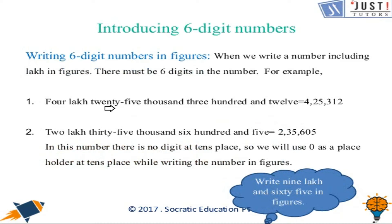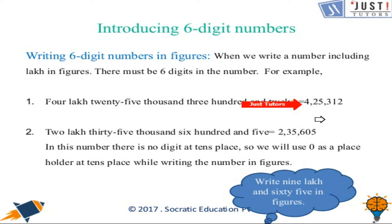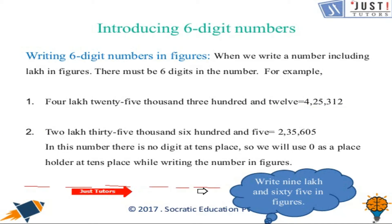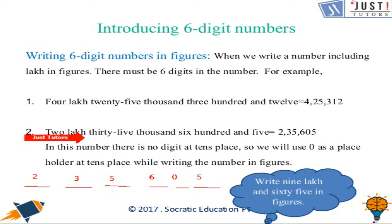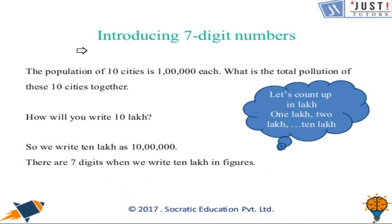Let's learn how to write 6-digit numbers in figures. We know that if it's a lakh number it must have 6 digits. First we write 4 and make 5 spaces after that, then write 25 and then 312 at the end. For the next question, I've made 6 places. The first part says 2 lakh, so we write 2 there. Next is 35,000 so 35 goes there, and then 605 — we write 6, 0, 5. That is how we write the number in figures.